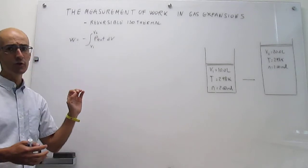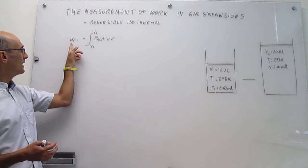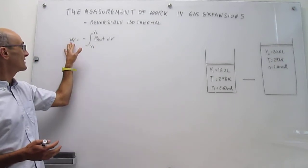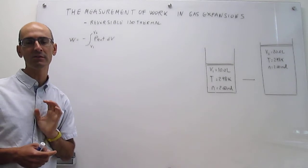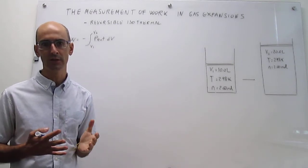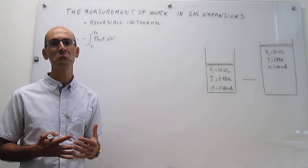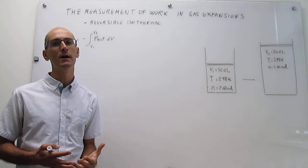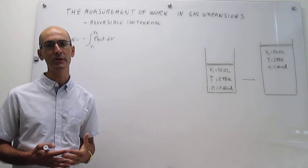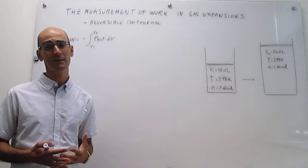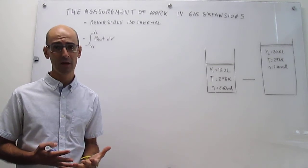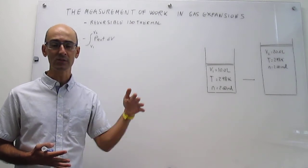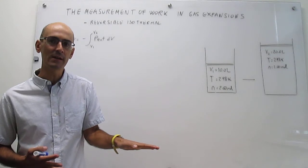Notice that in this expression you can always get the largest possible work — you could in principle get a very large amount of work if the constant external pressure is very large. The largest the constant external pressure is, the more work you're going to extract. However, there is a limit to that value of the external pressure, and that limit is given because you can't have an external pressure that is larger than the pressure of the gas, because if it is, then you won't expand.